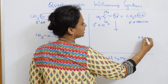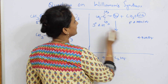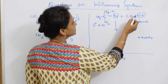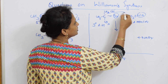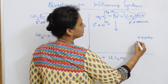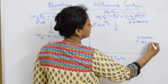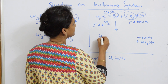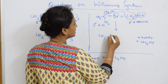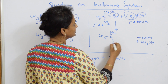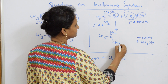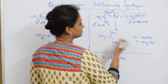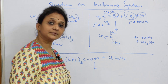So first, NaBr comes out. Then H leaves, and as I've shown, CH₃OH comes out as methanol. This bond is going to shift, so what you get is CH₃–C=CH₂ with a CH₃ group — and this is your alkene product.